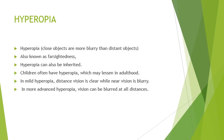Hyperopia is where close objects are more blurry than distant objects. It is also known as farsightedness. Hyperopia can also be inherited. Children often have hyperopia, which may lessen in adulthood. In mild hyperopia, distant vision is clear while near vision is blurry. In more advanced hyperopia, vision can be blurred at all distances.